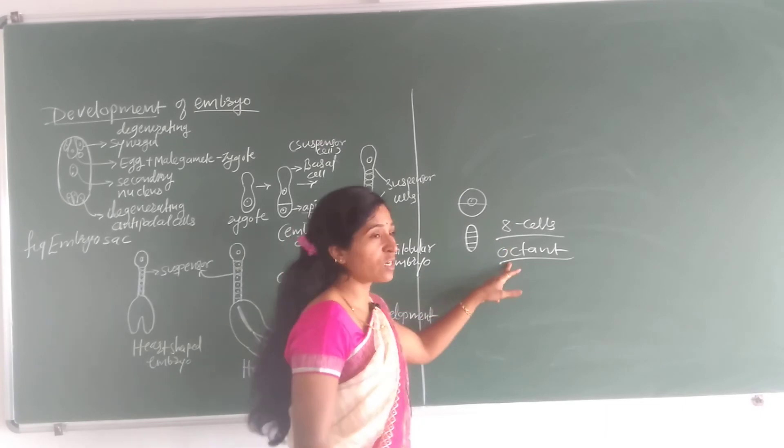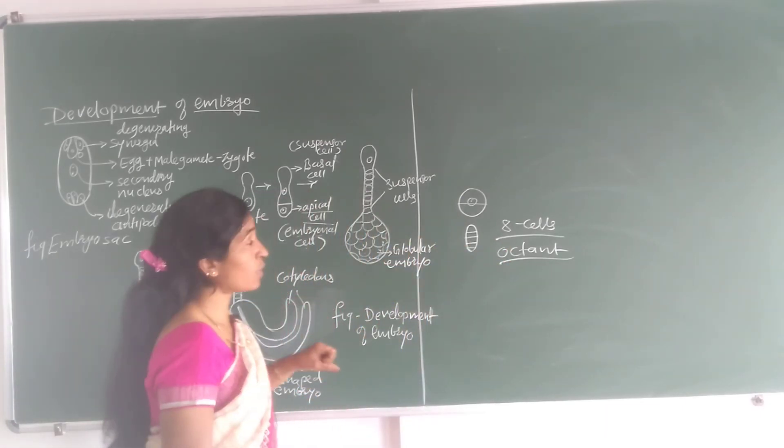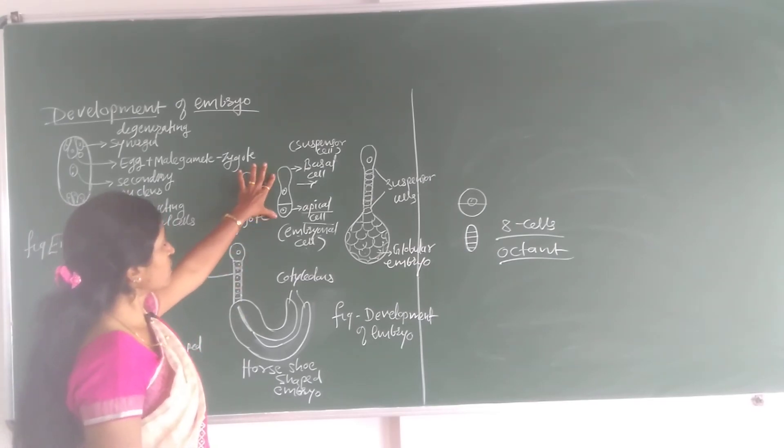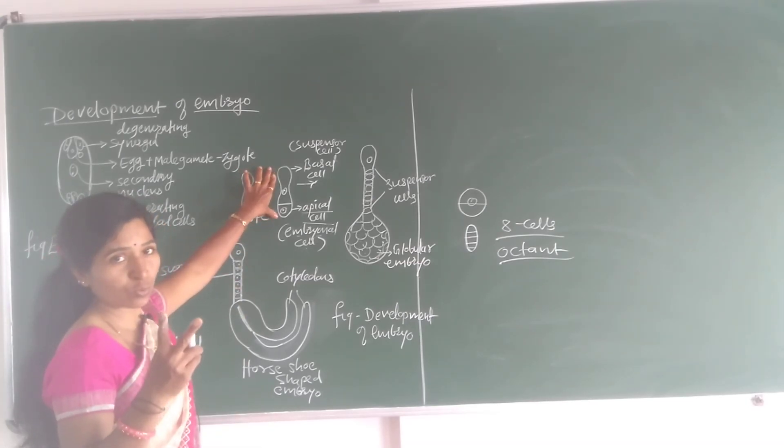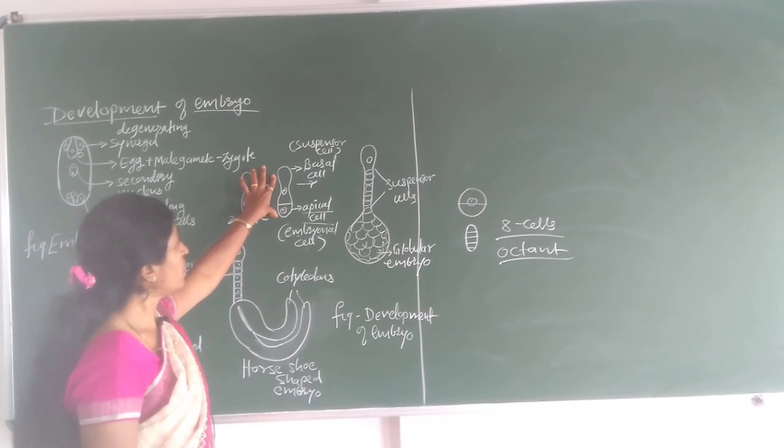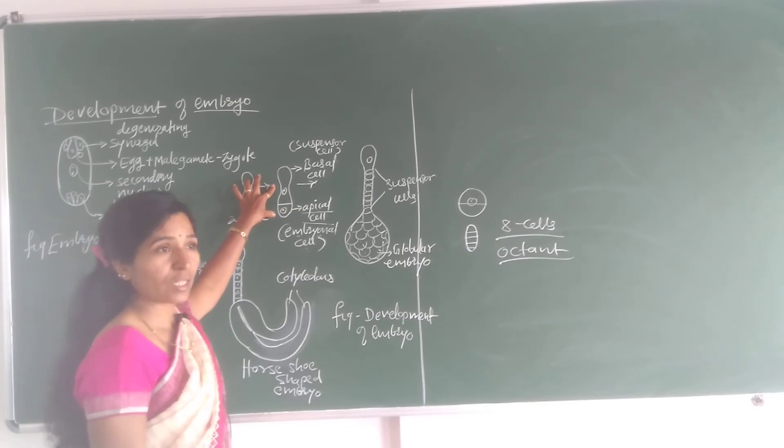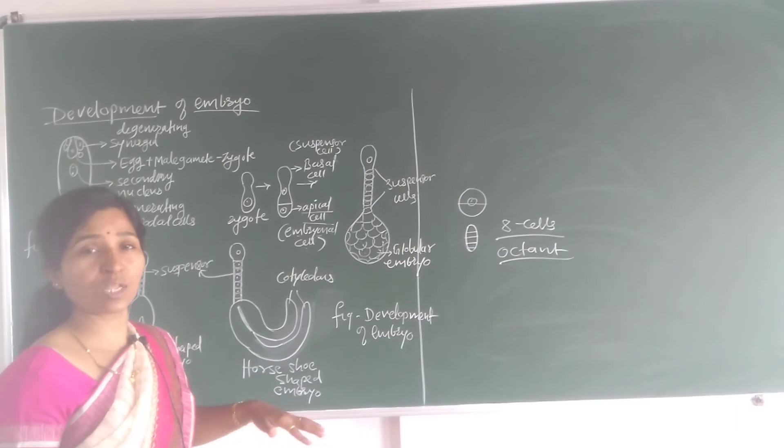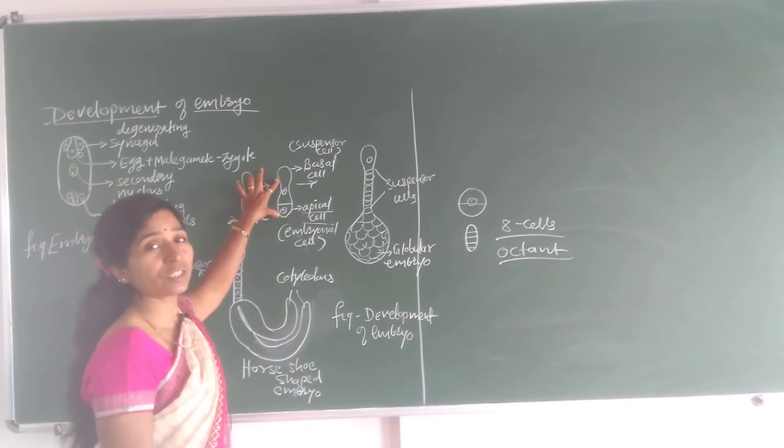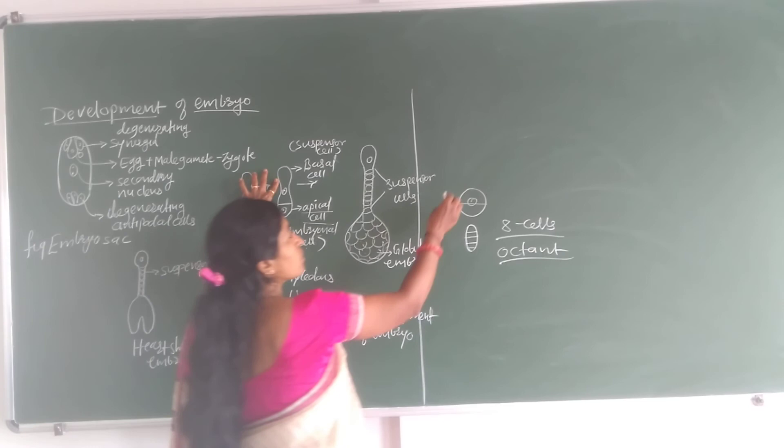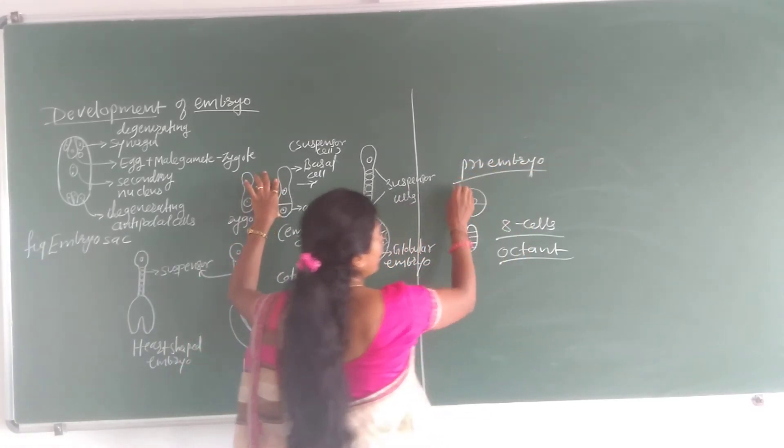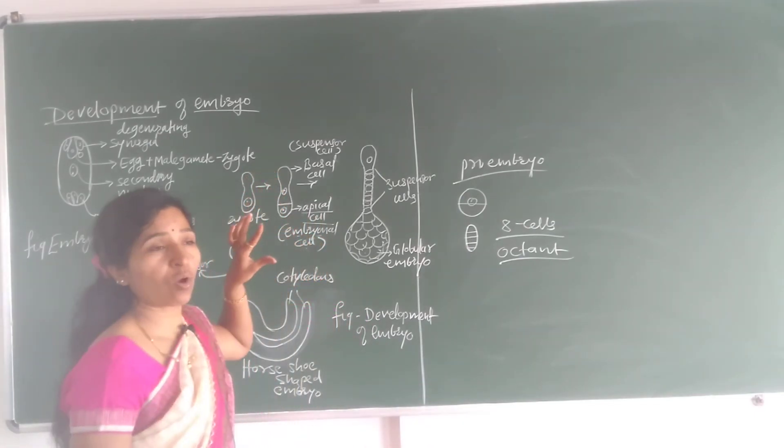The final cell structure, the embryo proper. And in this embryo proper we observe up to the organ formation, cotyledons, radicle. The organs that are previously developed. In this two cell stage, it's called the proembryo. A two cell stage is called proembryo.